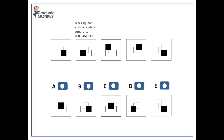In the third pattern, the black square moves one more step and leaves another white square. In the fourth pattern, a new, bigger square is formed as the black square moves one more step clockwise.